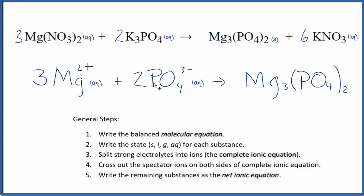This is Dr. B with the balanced net ionic equation for magnesium nitrate plus potassium phosphate. Thanks for watching.